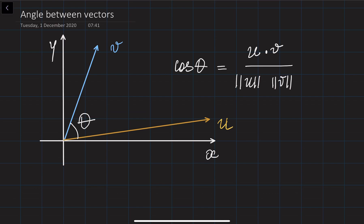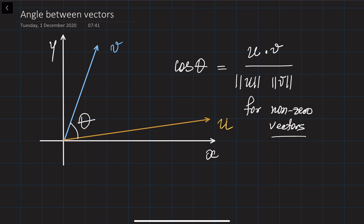Please note that this formula works for non-zero vectors. Because when one of the vectors is equal to zero, then the two vectors automatically become parallel and perpendicular at the same time. We are going to discuss parallel and perpendicular vectors in our next video.